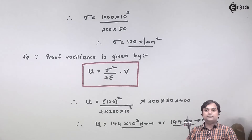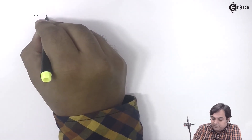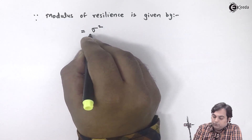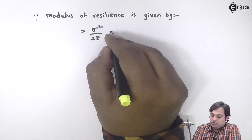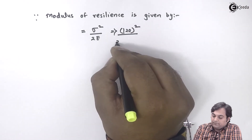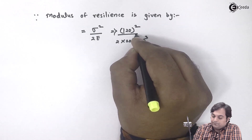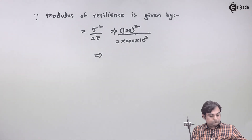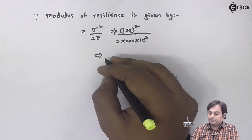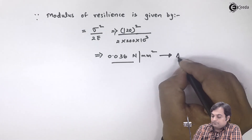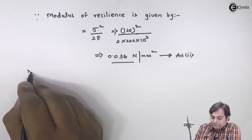Next we have to calculate modulus of resilience. Modulus of resilience is given by σ²/2E — that is strain energy divided by volume. Therefore, with sigma equal to 120 and E equal to 200 × 10³, the answer for modulus of resilience is 0.036 Newton per mm square.